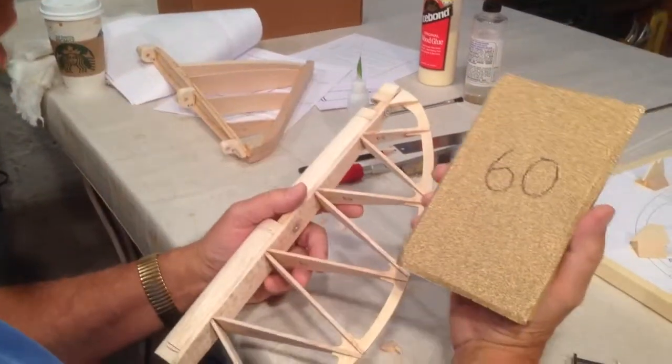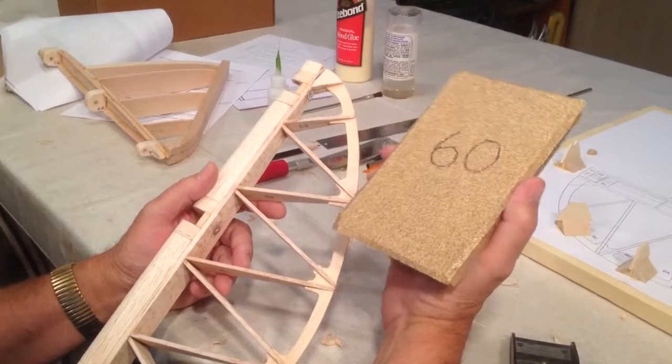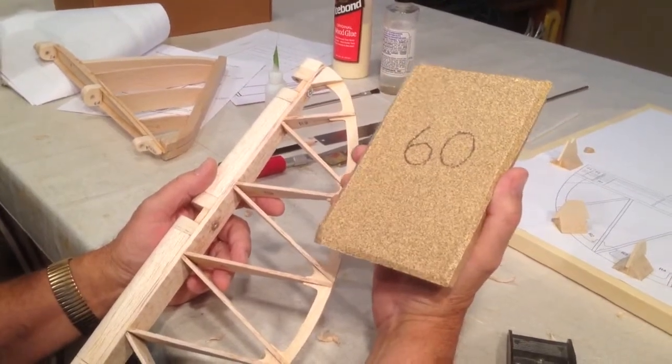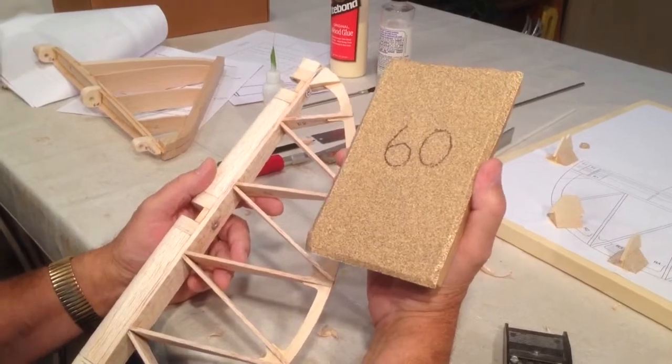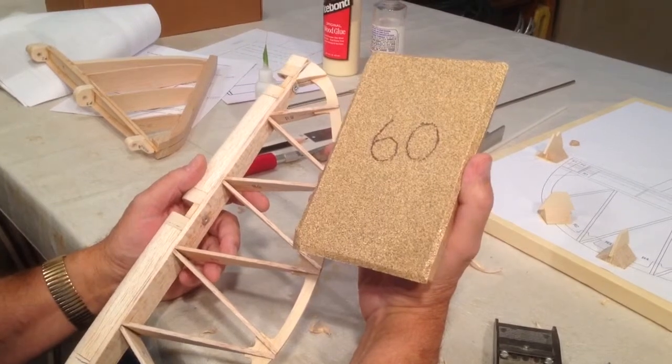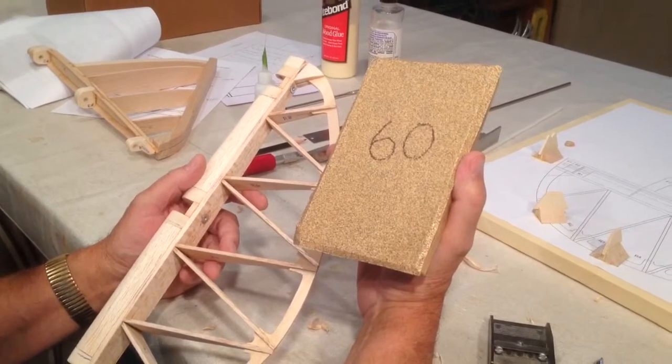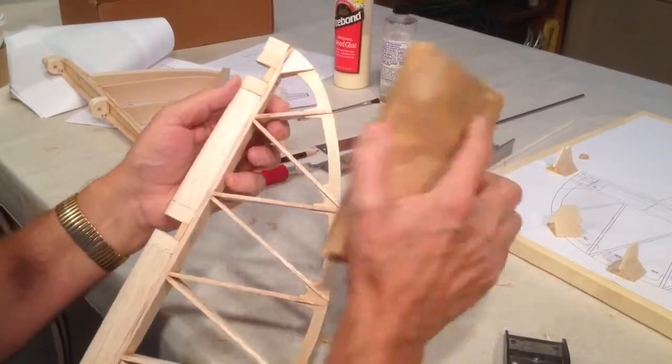Now we're going to finish this off with a 60 grit sanding pad. Always use a big pad or big block and some new sandpaper so it'll cut nicely. Very light touch is all that's needed. You don't want to do a heavy hand on this.